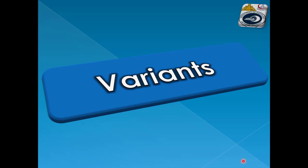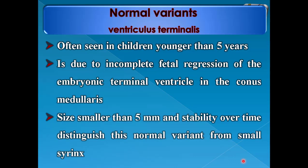We should know there are some normal variants in appearance that should not be misdiagnosed as pathology. The first of them is ventriculus terminalis, often seen in children younger than five years old. It is due to incomplete fetal regression of the embryonic terminal ventricle in the conus medullaris. Size smaller than 5 millimeters and stability over time distinguish this normal variant from a small syrinx.